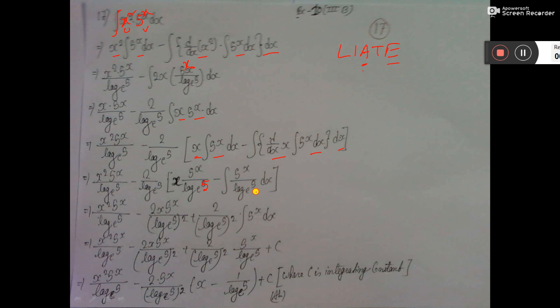Again, 5 to the power x integration. Again 5 to the power x integration. Now, this log 5 base e will come out. That one and this one multiply then it will be whole square. These two also taken.